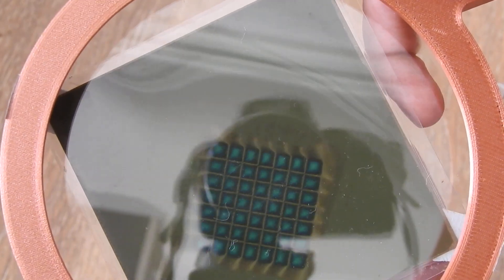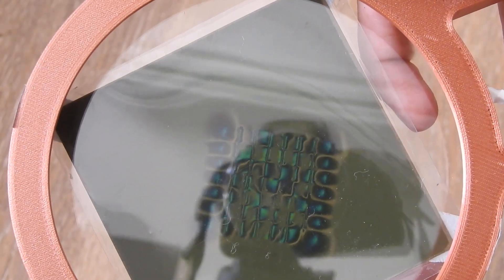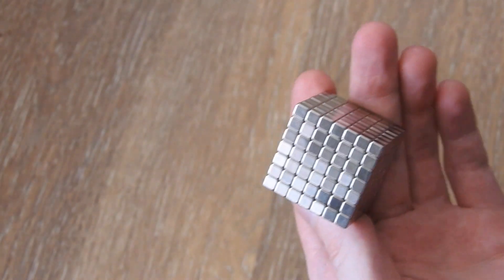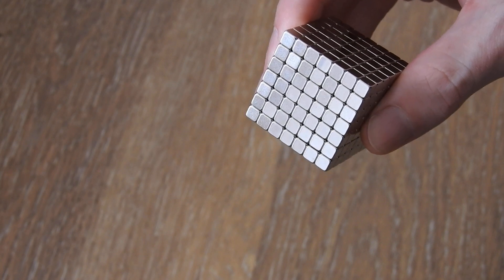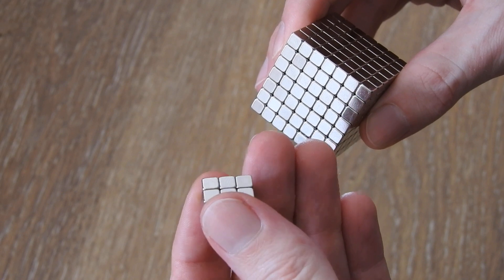Same on the other side. So this is just the field shape under the magnetic viewing film. Now I will show you some more interesting effects. Here I have more of these five millimeter cube magnets stacked together.